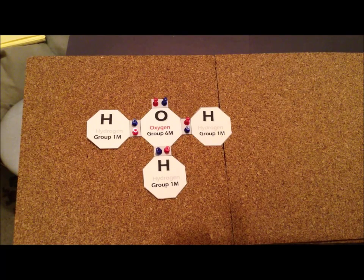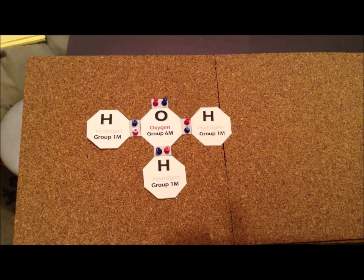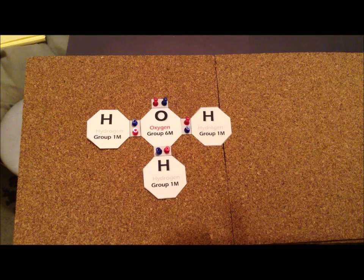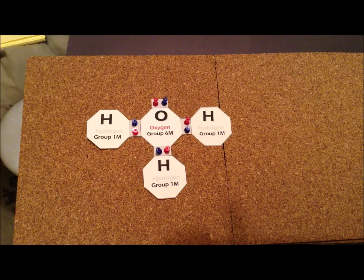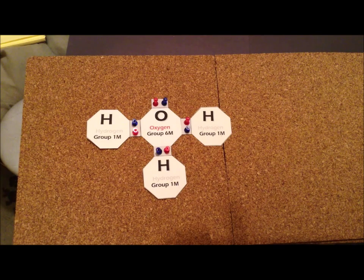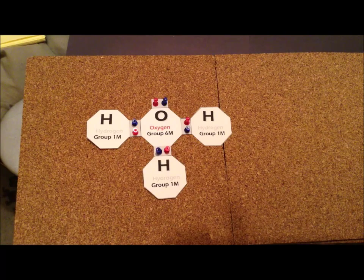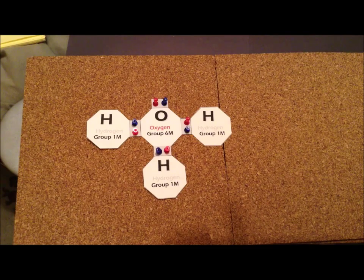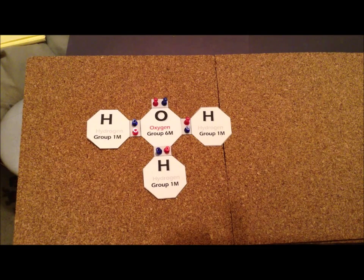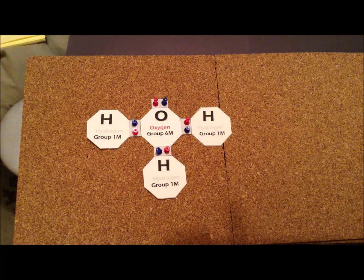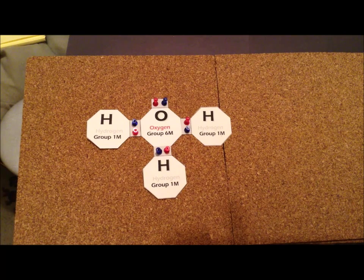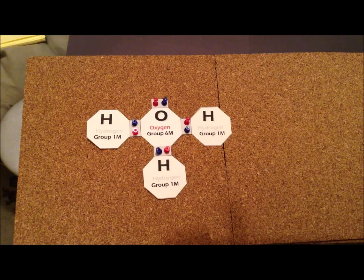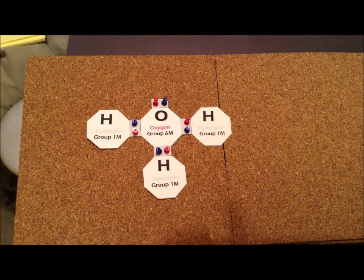Another ion that is extremely important in acid-base chemistry is the hydronium ion, H3O plus. How many electrons would we have in this system? Oxygen has six, we have three hydrogen atoms each contributing one electron, giving us a total of nine electrons. The ion has a plus one charge. For every plus one charge in our ion, we remove one electron. So we go from nine electrons to eight.